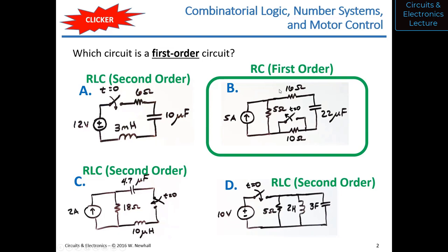You could replace the capacitor in B with an inductor and still have a first-order circuit, but you can't have both a capacitor and an inductor in a circuit and have it be first order. Any questions on first-order versus second-order circuits?